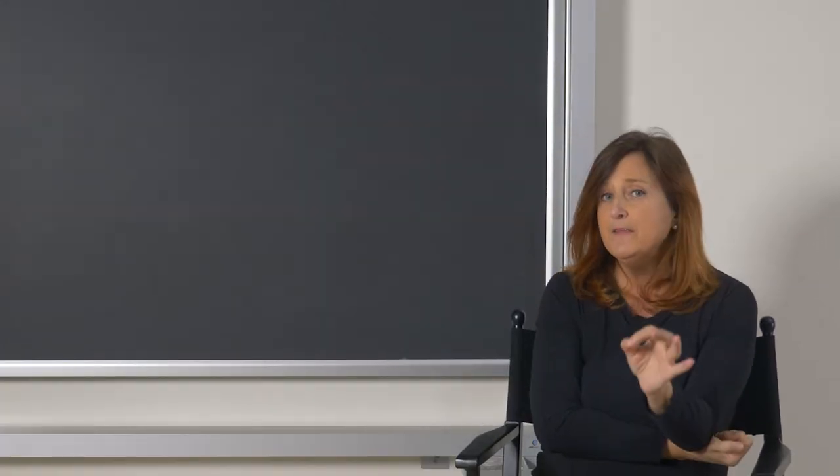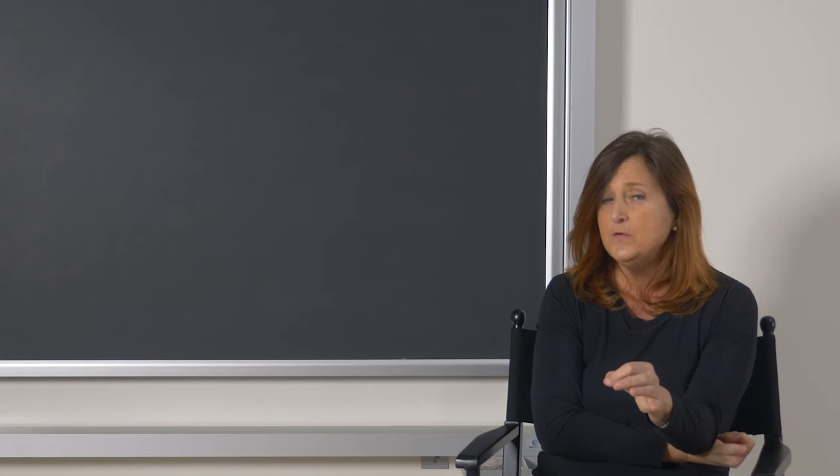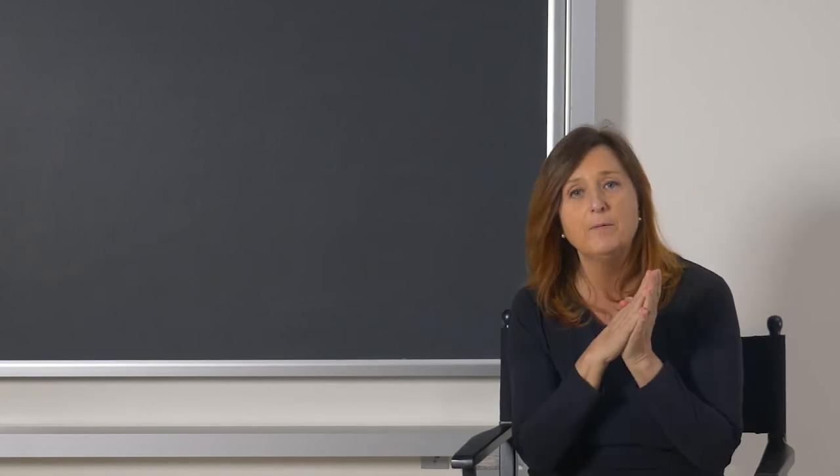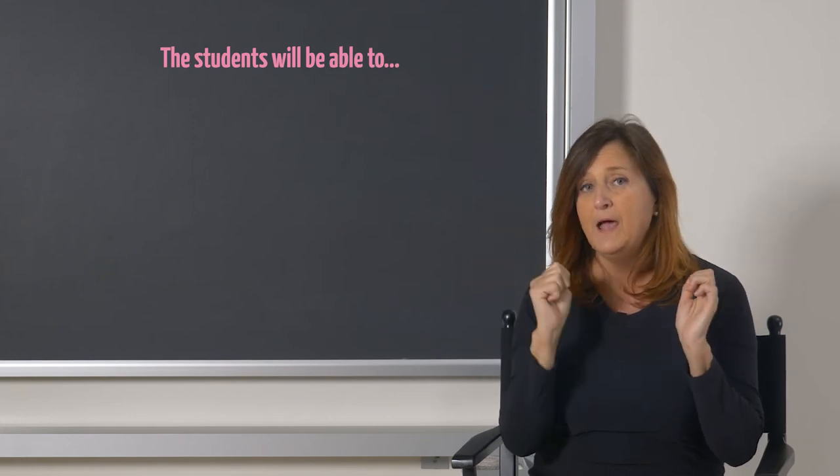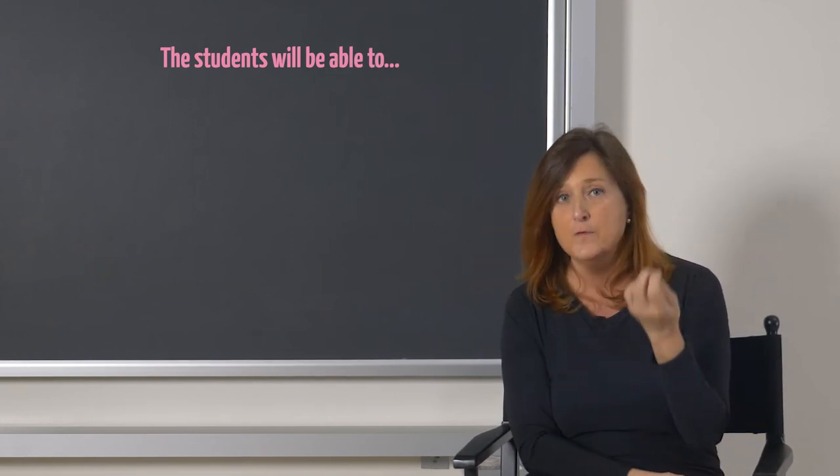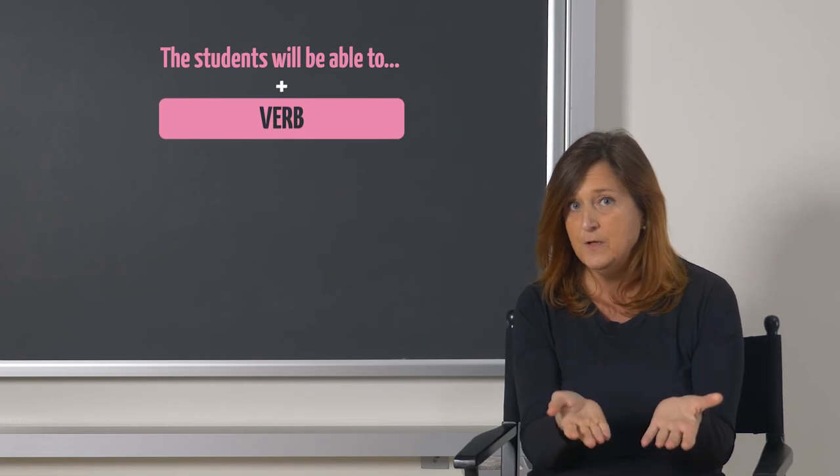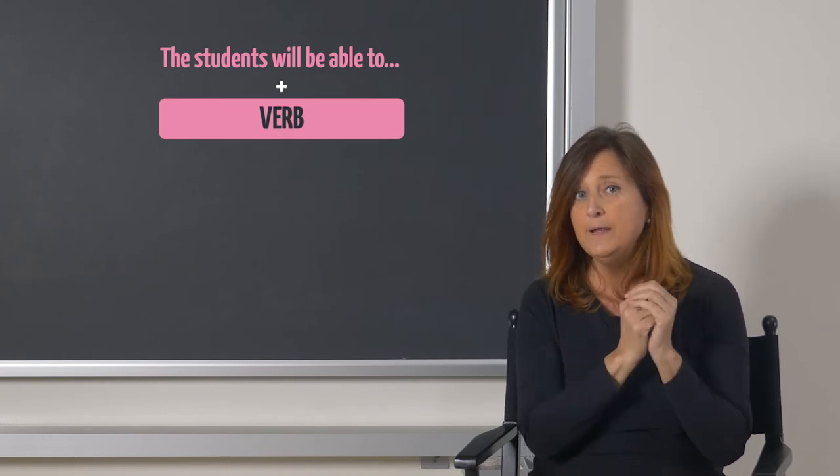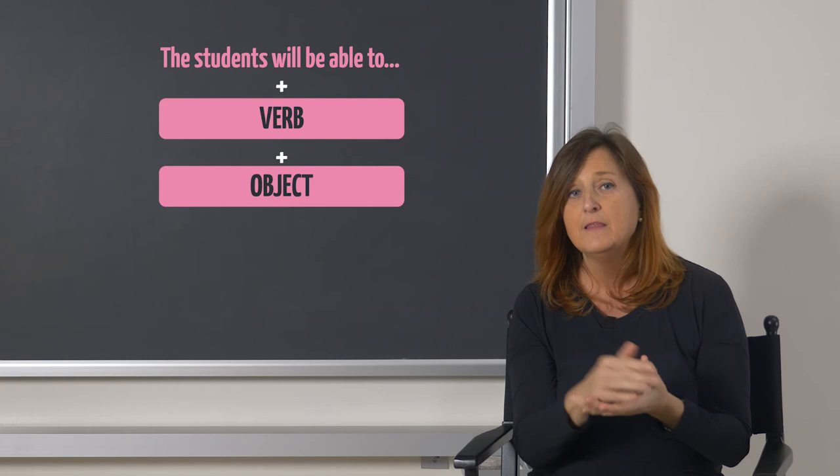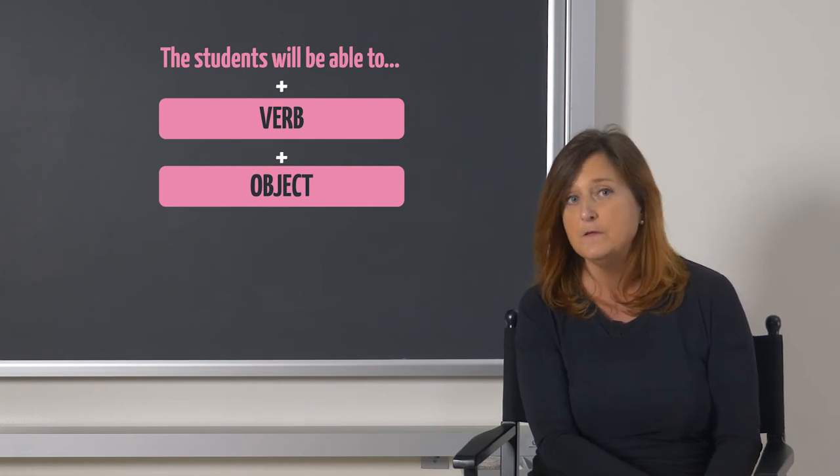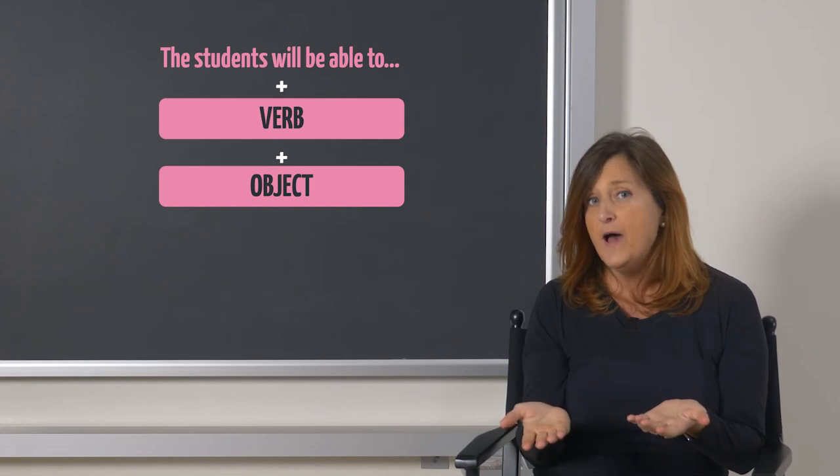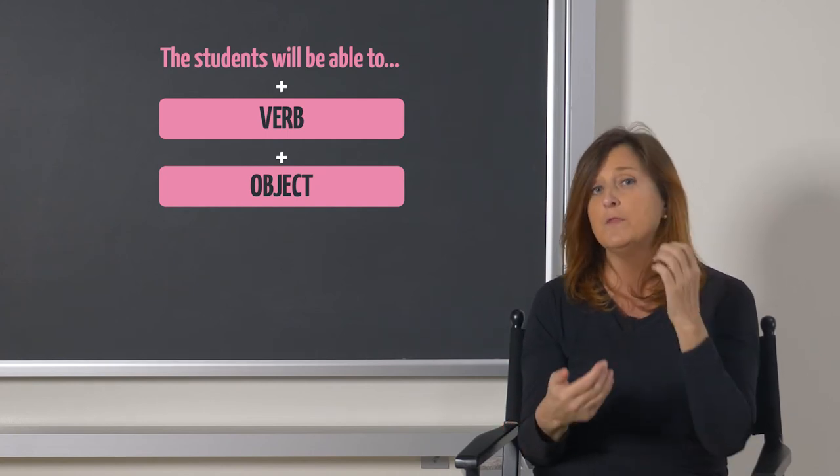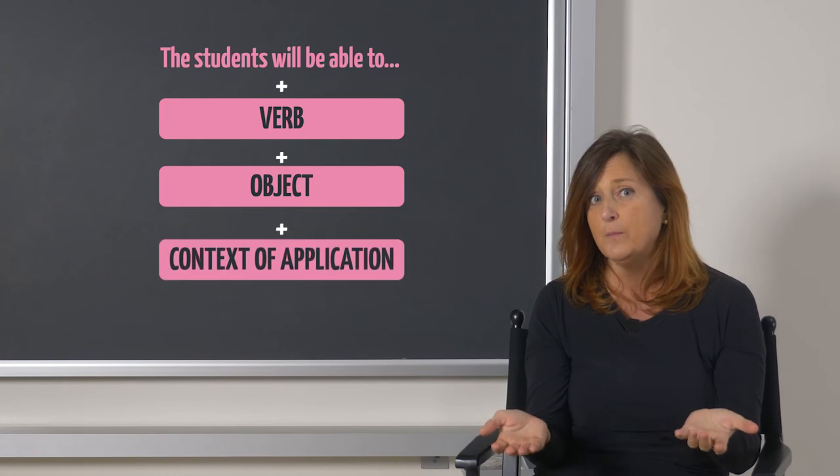To help us formulate the intended learning outcomes in terms of performance, we can use the startup formula: the student will be able to... Afterwards, we can add a verb, that is the action we expect the student to complete, and the object, that is the field of application specific to this action. Then we can further specify the intended learning outcomes, also giving information on the context of application of the performance.